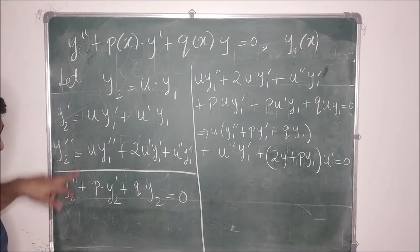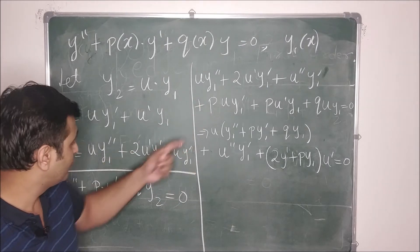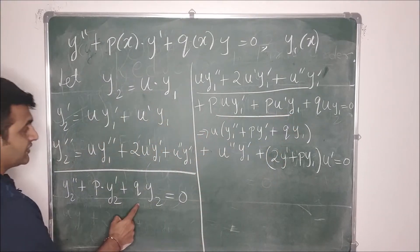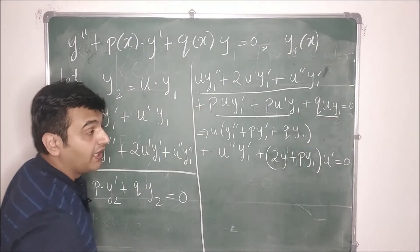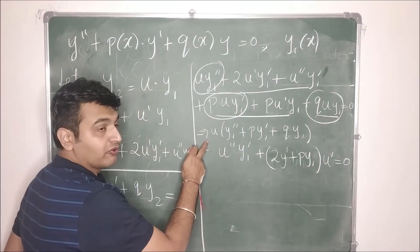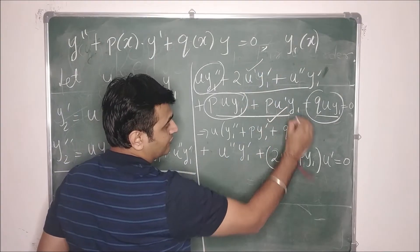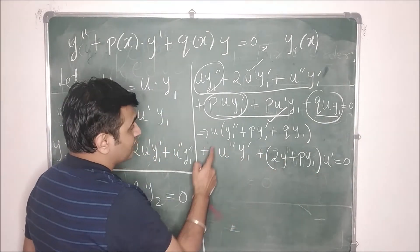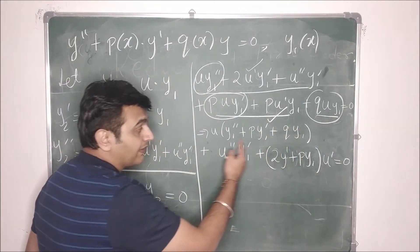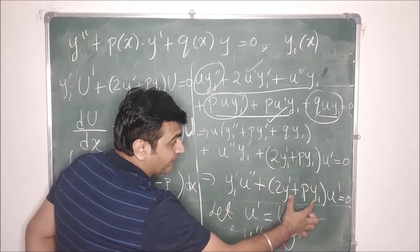After substituting, y2'' gives terms u·y1'' + 2u'·y1' + u''·y1. Grouping terms, we collect u outside from the three terms involving y1'' + p·y1' + q·y1 — this bracket equals zero because y1 satisfies the ODE. What remains is: u''·y1 + (2y1' + p·y1)·u' = 0.